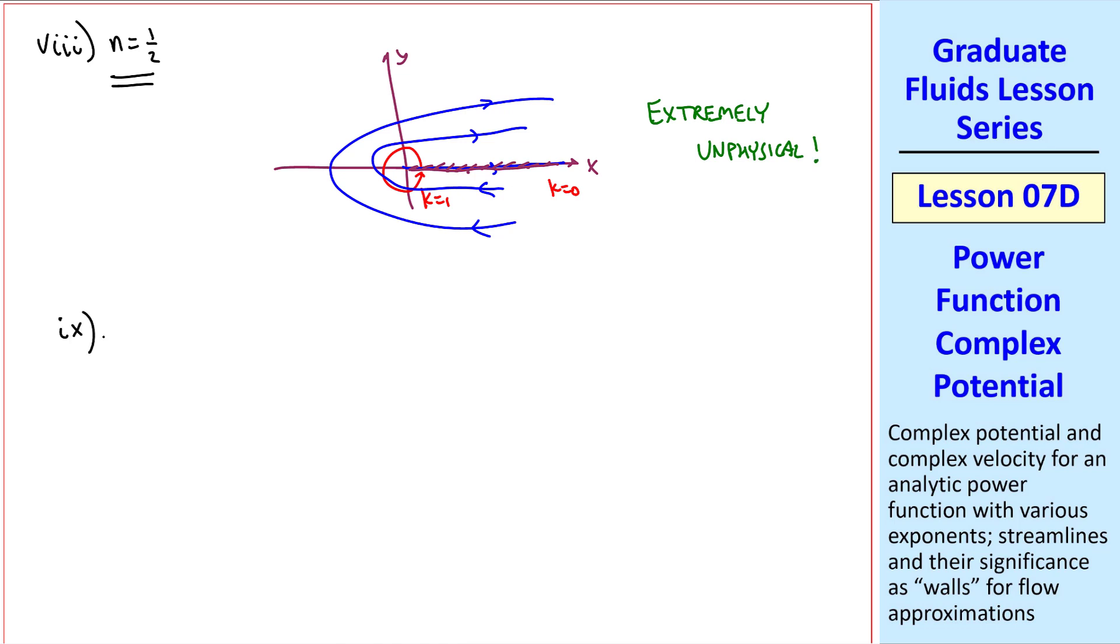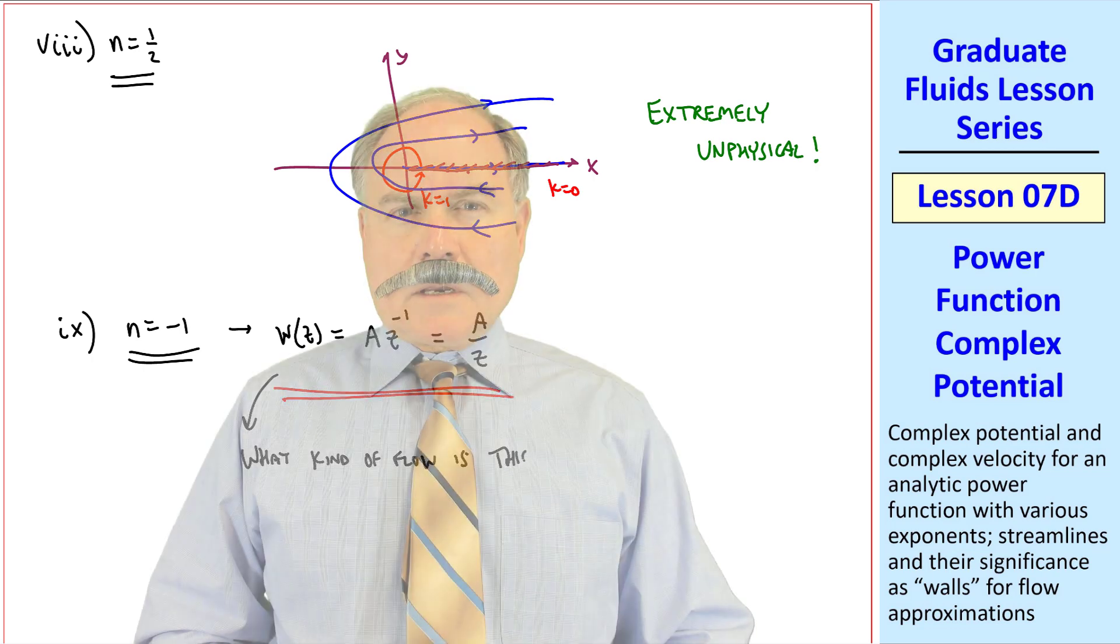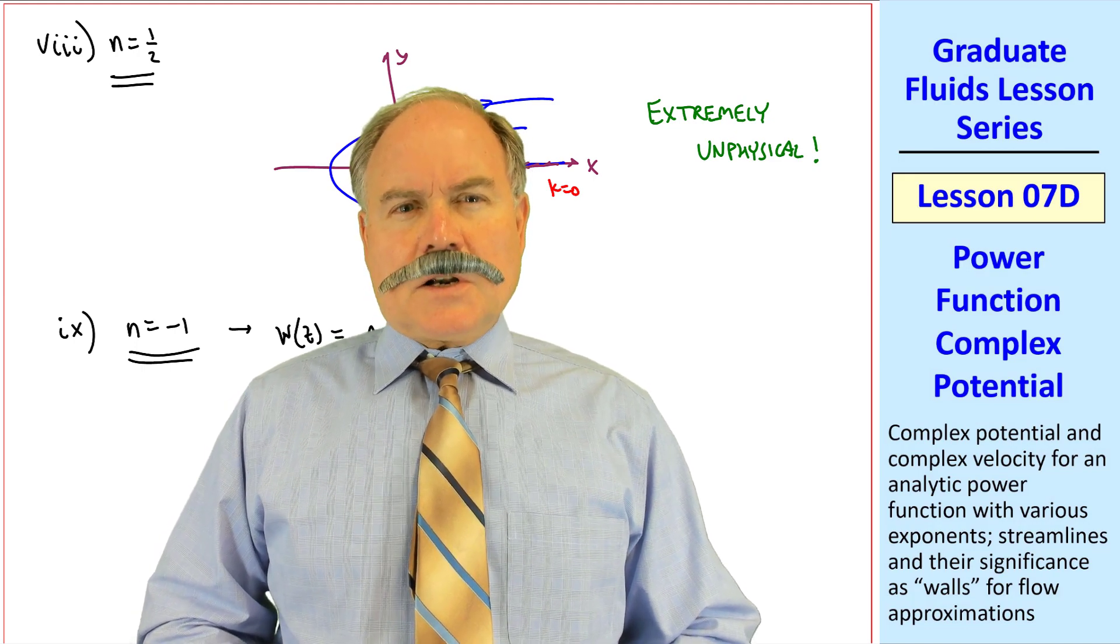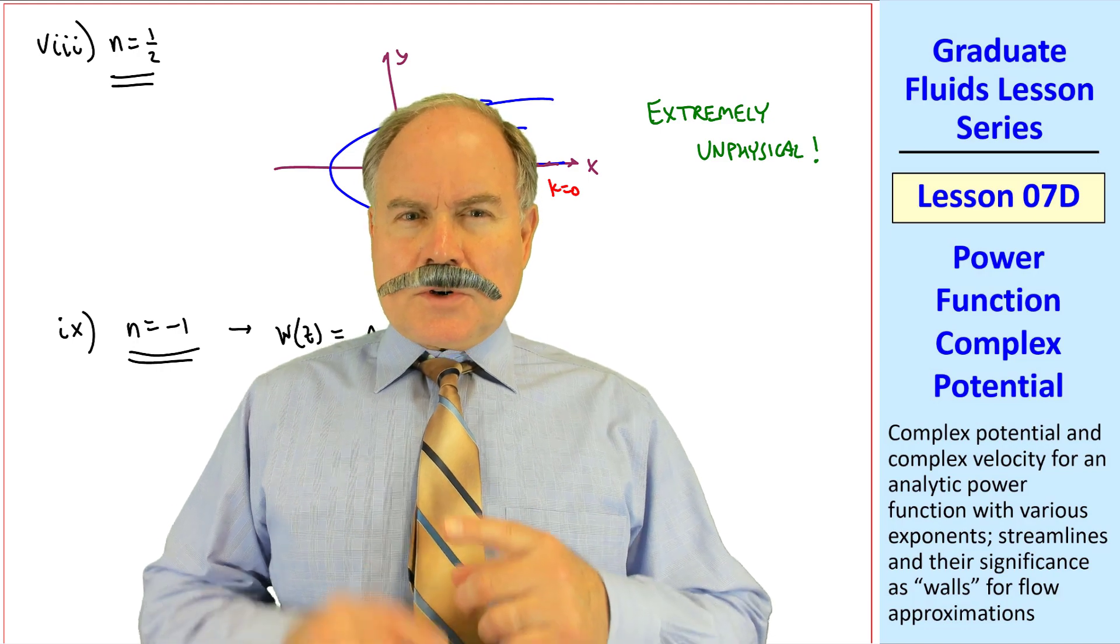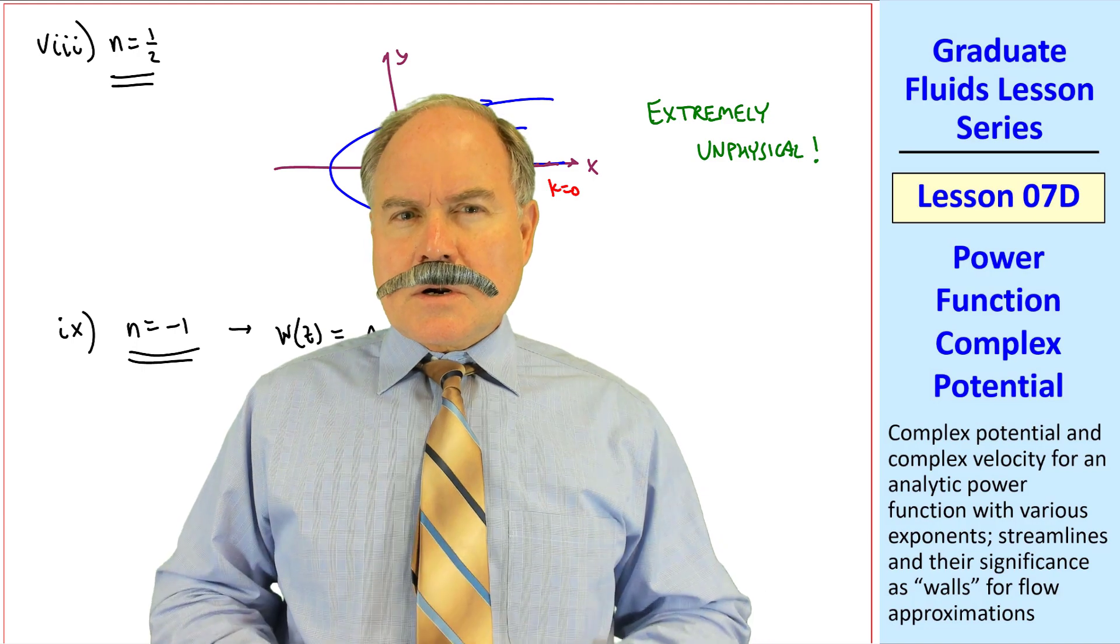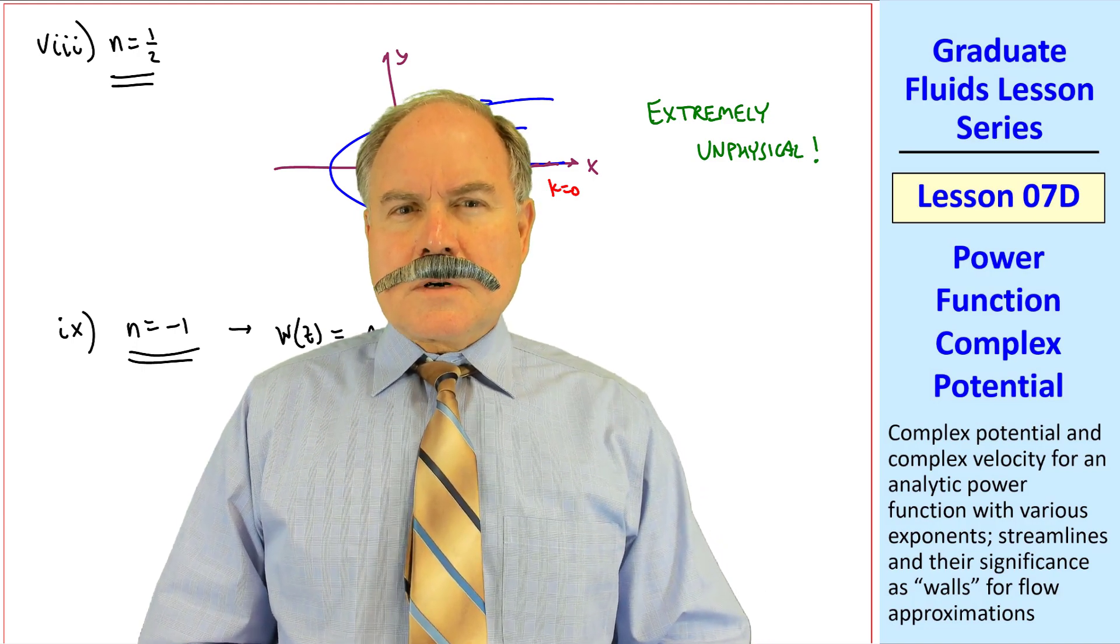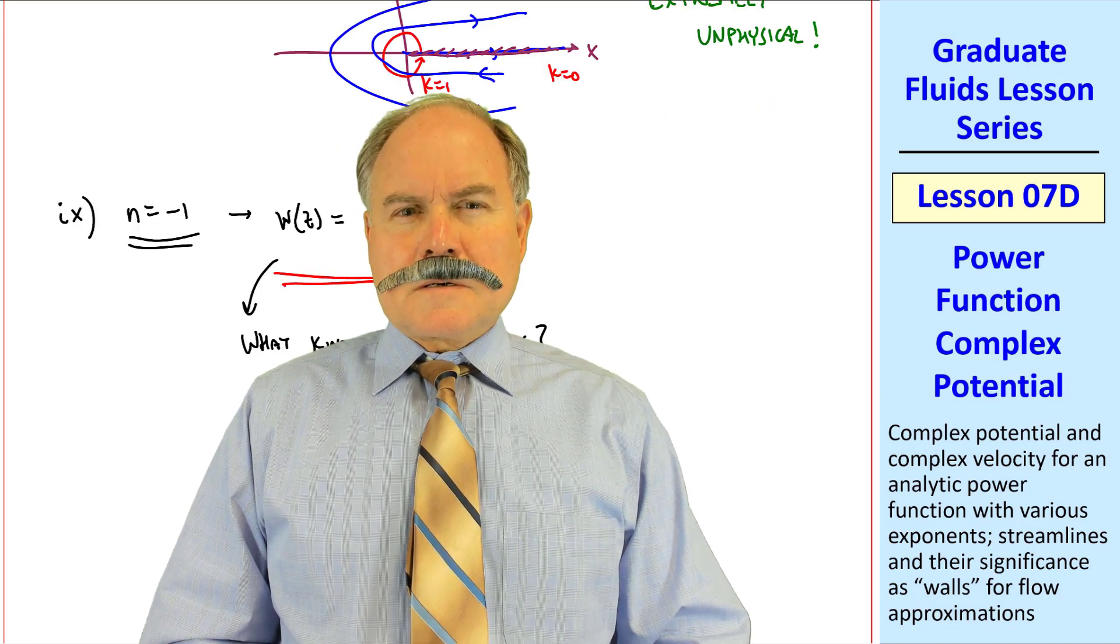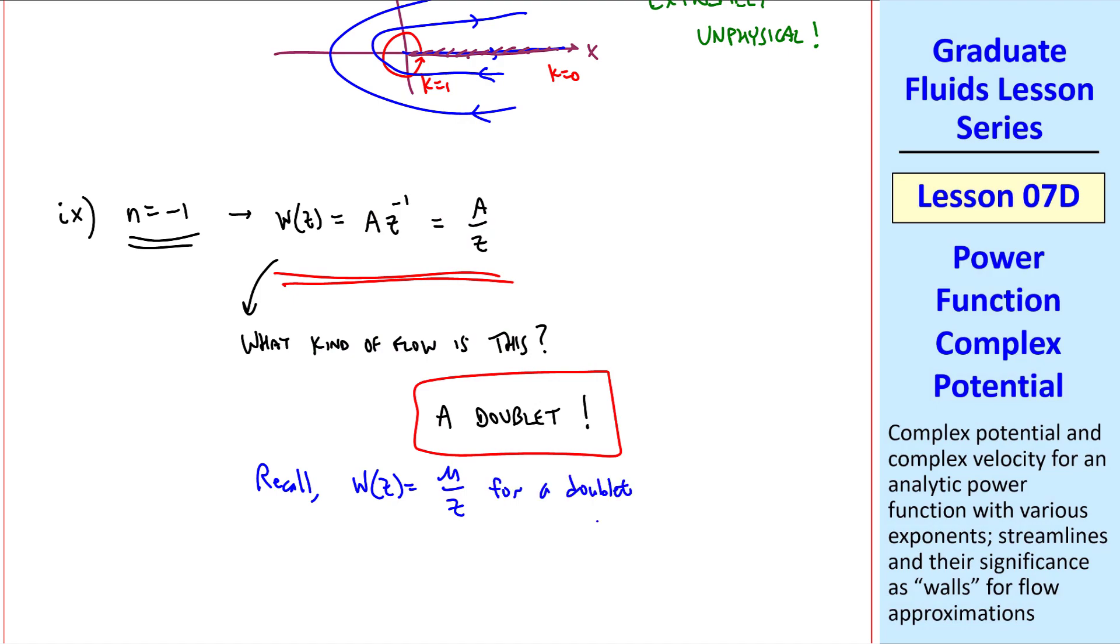Finally, what happens if we have n equal negative 1? This gives us w of z equal a z to the minus 1, or a over z. Can one of you students tell me, what kind of flow is this? Since z is in the denominator, it must have a singularity at the origin. Is it a source? That has rays that go out in all directions. Good guess, Sean, but it's actually one of our other building blocks. Is it a doublet? Yes, it's a doublet. Recall that w of z is mu over z for a doublet. So if we let a equal mu, we have a doublet.